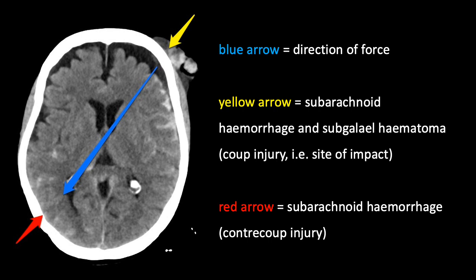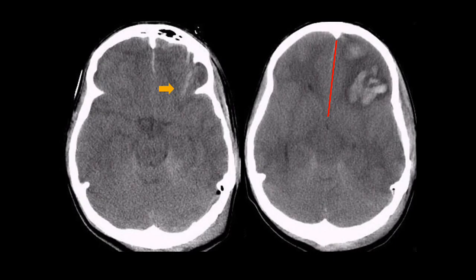This is a typical coup and contrecoup blood density pattern. When looking at contusion progression, an early scan shows contusion and edema with slight effacement of the basal cisterns. Three days later the same patient shows increased size of the contusion and edema, intracranial shift indicated by the red line, and complete effacement. Effacement of the basal cisterns indicates raised intracranial pressure.